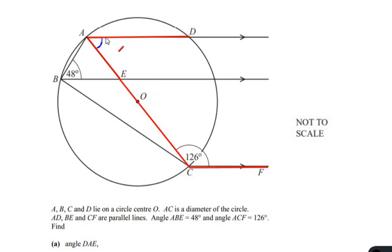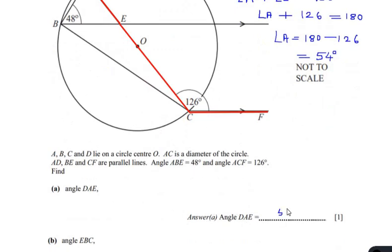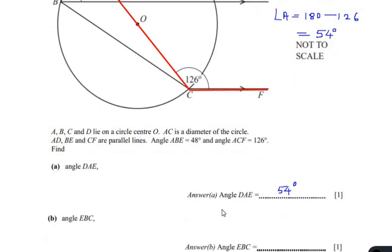Using the property of the parallel lines, angle A and angle C are co-interior angles, so they add up to 180 degrees. Angle A plus angle C equals 180. Angle C is 126 degrees, so angle A equals 180 minus 126, which gives us 54 degrees. So angle DAE is 54 degrees using the co-interior angle property.